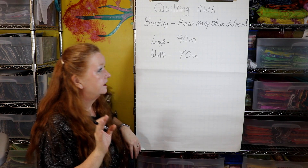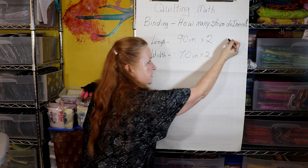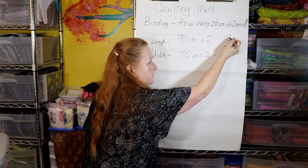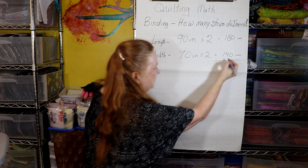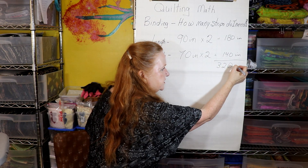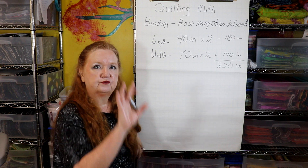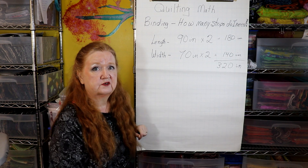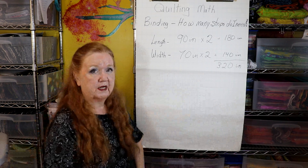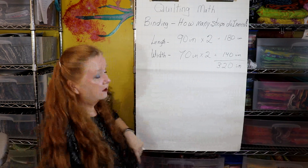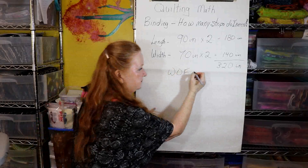Now you multiply each dimension by two because there are two sides of that length. So 90 × 2 = 180 inches, and 70 × 2 = 140 inches. Add those together and you get 320 inches of binding needed. If you're using scrap pieces that aren't full fabric width, you'll have to actually measure out 320 inches and then give yourself a little wiggle room — about a foot or so.